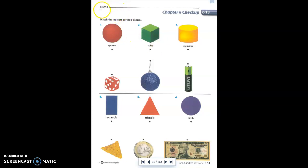The first thing we need to do is look at the top of our page. It says match the objects to their shapes. Number one, they've given me a sphere. Number two, they've given me a cube. And number three, they've given me a cylinder. I need to find objects below here that match.